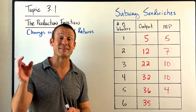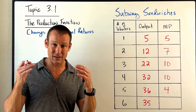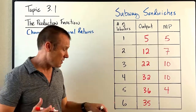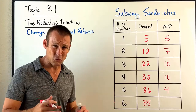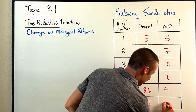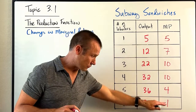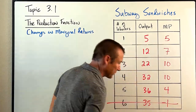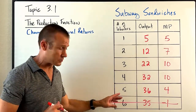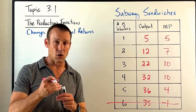The sixth person is hard to place. There's definitely downtime, people starting to have side conversations, maybe cliques forming. Look how many sandwiches we make: 35 — that's a marginal product of negative one. This is negative marginal returns. When you study theory of the firm, you will never hire that sixth person. You'll never hire when you start getting negative marginal returns.